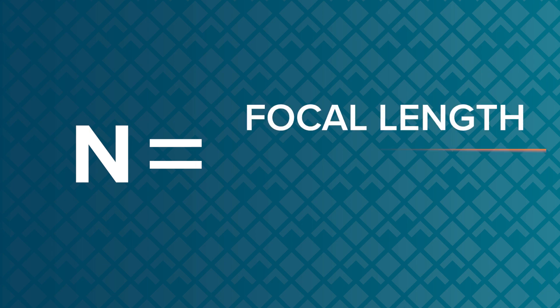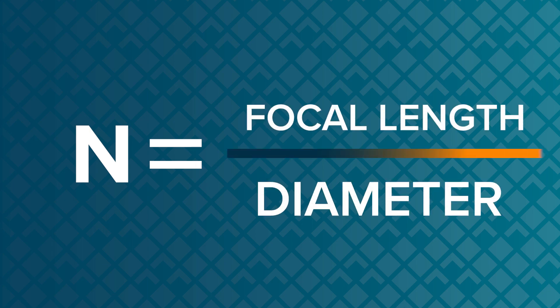The first thing I want to discuss about F number is its fundamental formula. It's a very simple formula. F number is the ratio of the focal length of a lens divided by the diameter of the lens.